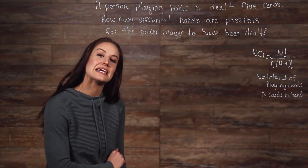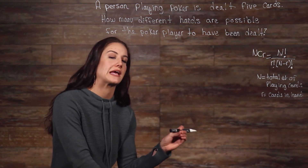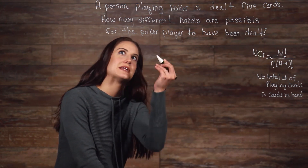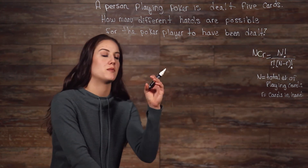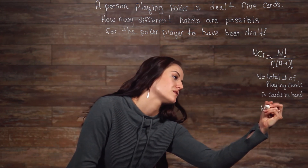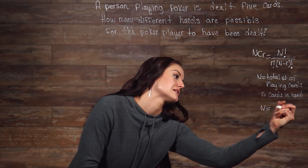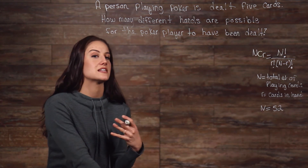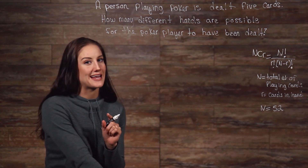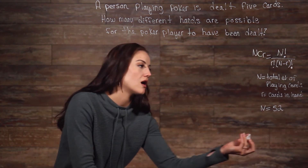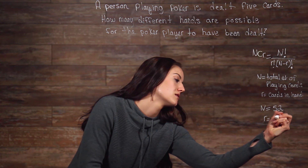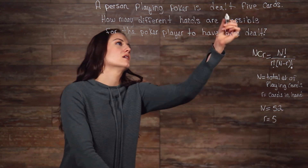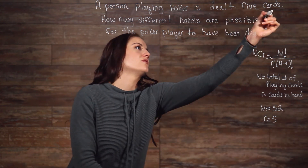So since n is equal to our total number of playing cards, we know that n is equal to 52. It doesn't say in our problem, but we are expected to know that there are 52 cards in a standard playing deck. Now, r is the number of cards in the person's hand at a time, so r is equal to 5 — that tells us the person is dealt 5 cards.